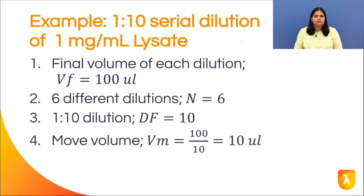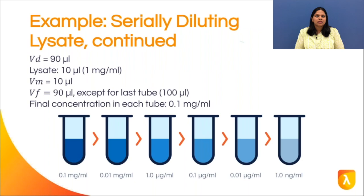Let's look at some common examples of serial dilutions. To make a 1-to-10 serial dilution of a stock of 1 mg/mL cell lysate, with a final volume of 100 microliters required for each dilution, we need 6 different dilutions. For a 1-to-10 dilution, the move volume is calculated by dividing the final volume by the dilution factor. First, we add 90 microliters of diluent to each of the 6 tubes, then take 10 microliters of the stock lysate and add it to the first tube to make a 1-to-10 diluted solution, giving a concentration of 0.1 mg/mL.